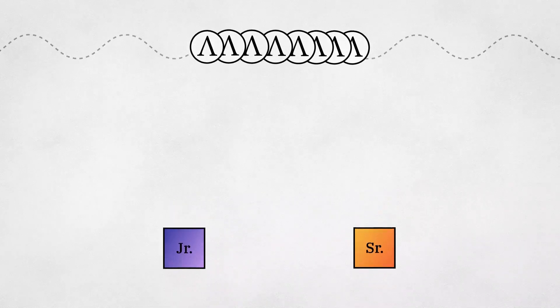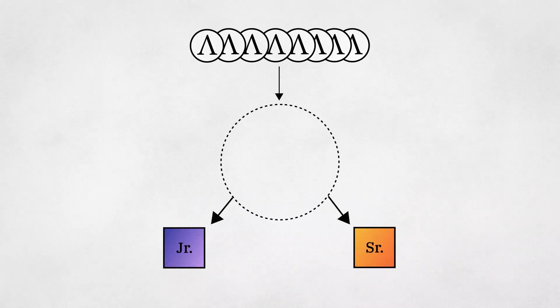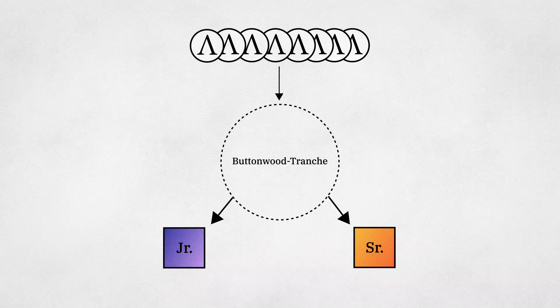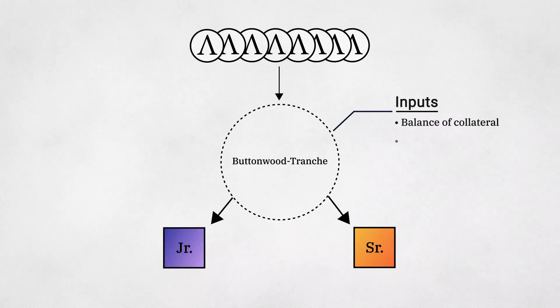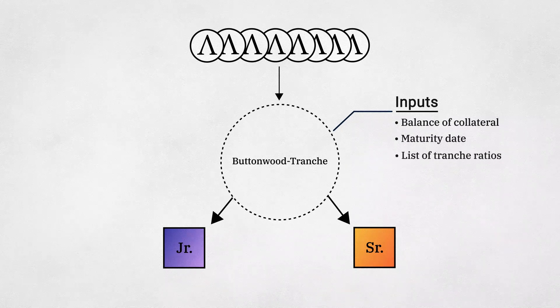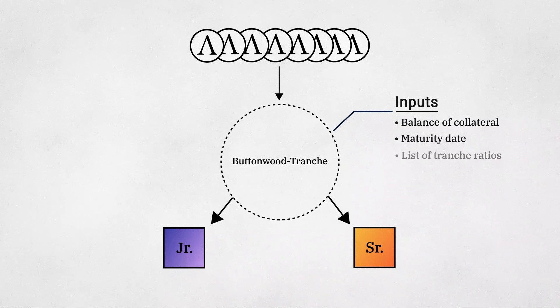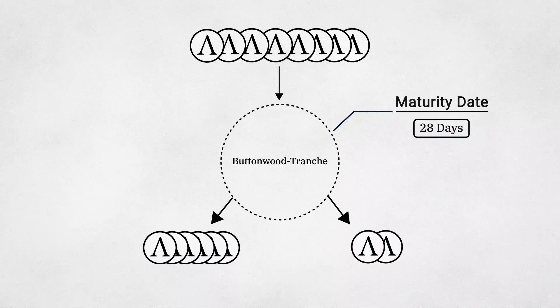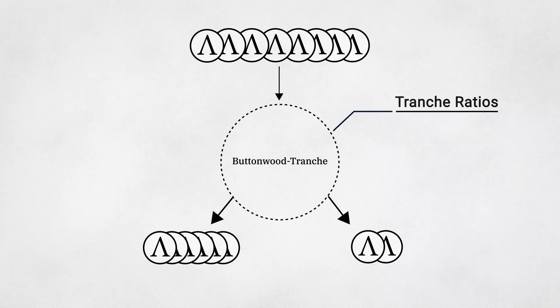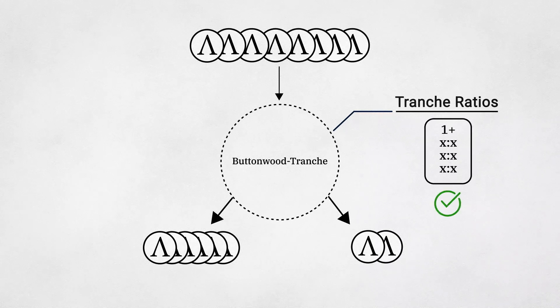To achieve this, SPOT uses an open tranching protocol called Buttonwood Tranch. This protocol accepts as its inputs a balance of collateral, a maturity date, and a list of tranche ratios. The maturity date is a predetermined date after which senior and junior tranches mature back into their underlying collateral. And the tranche ratios are a list of values adding to one that determine the order and seniority of redemptions.